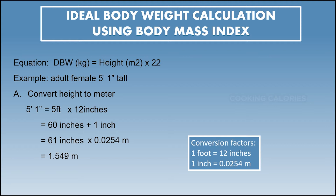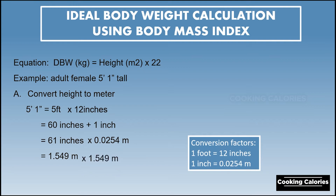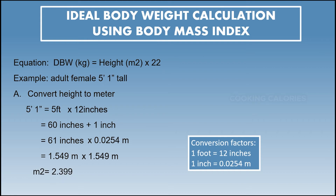Since the formula needs height in meters squared, we need to square the height. To square this, we multiply the number by itself: 1.549 meters multiplied by 1.549 meters equals 2.399. This is now our height in meters squared.